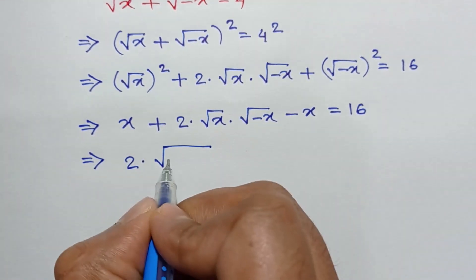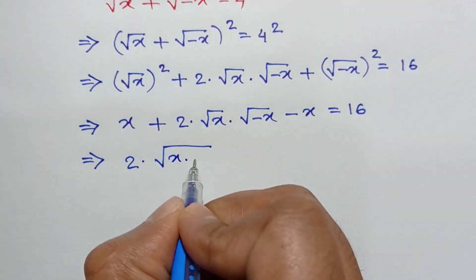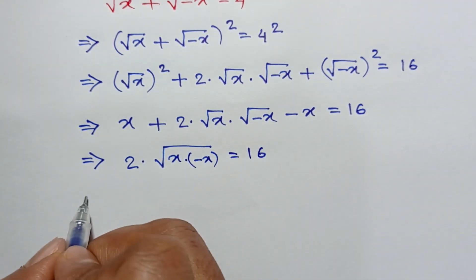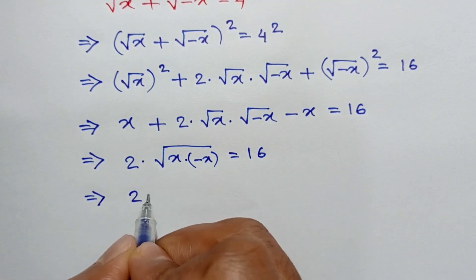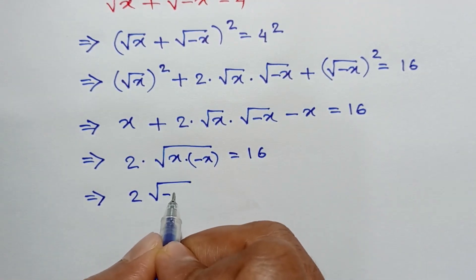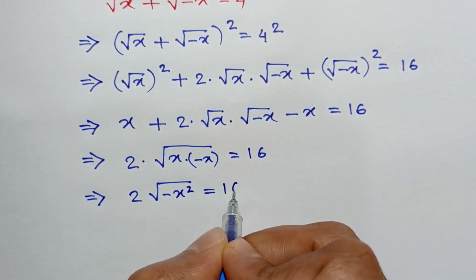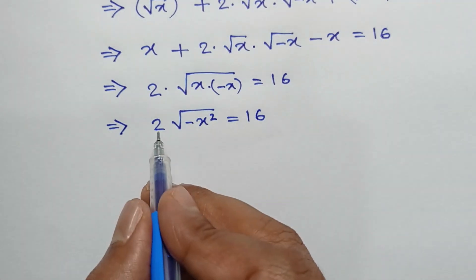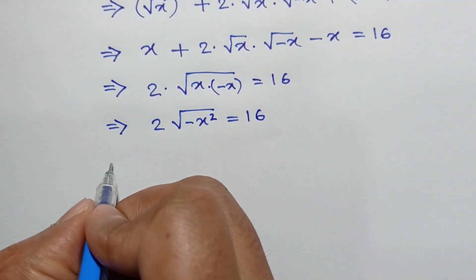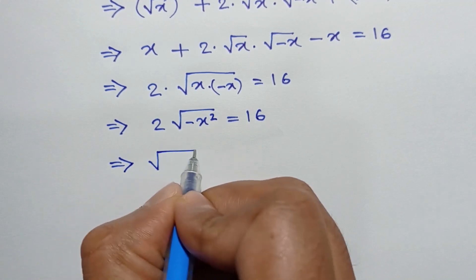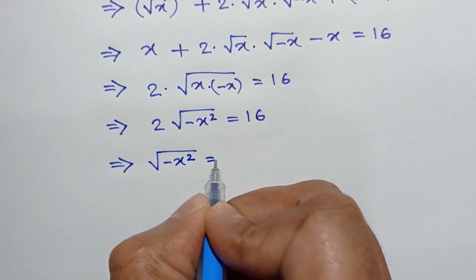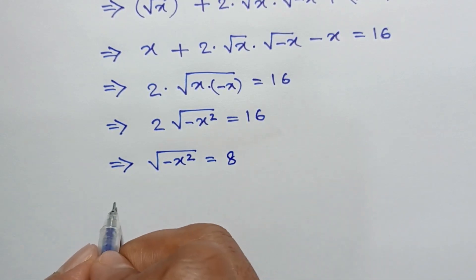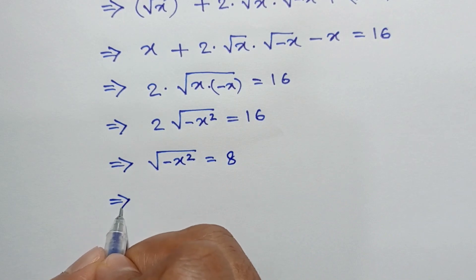So it will remain: 2 times square root of x times negative x is equal to 16, or 2 times square root of negative x squared is equal to 16. Now if we divide both sides by 2, we will have square root of negative x squared is equal to 16 divided by 2, which is equal to 8.